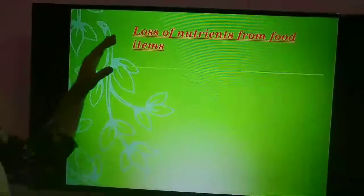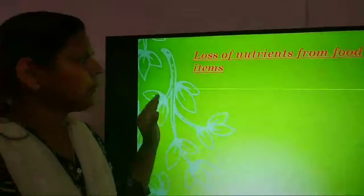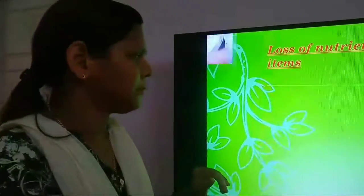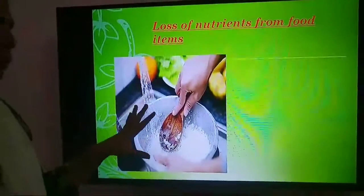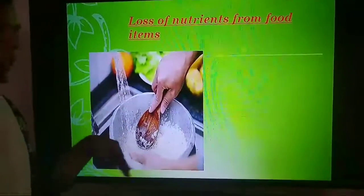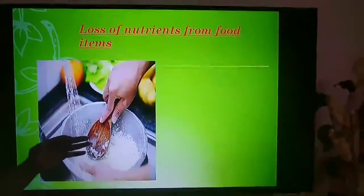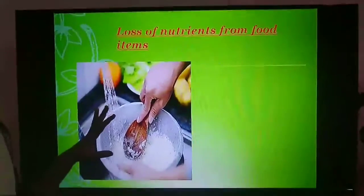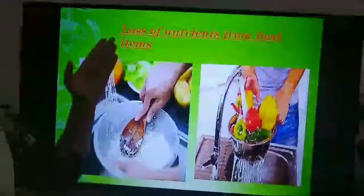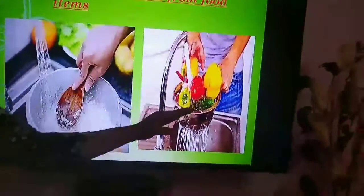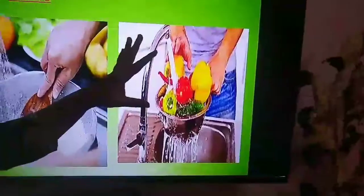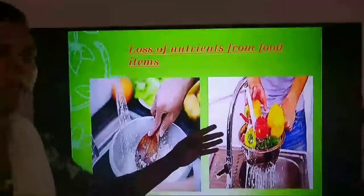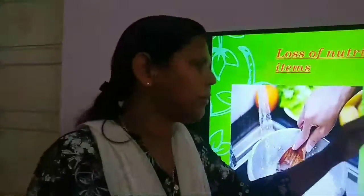Now let us learn about loss of nutrients from food items. The first way nutrients are lost is through washing. Before making boiled rice, we wash the rice repeatedly. When we do that, most of the nutrients present in it will be lost. We can wash it, but don't wash it 4 or 5 times. However, fruits and vegetables must be washed because they contain a lot of chemicals, and eating them unwashed can cause different health issues.